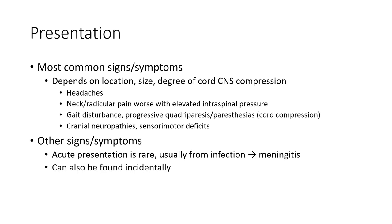Most common signs and symptoms depend on location, size, and degree of cord and CNS compression. These include neck and radicular pain worse with elevated intraspinal pressure, gait disturbance, progressive quadriparesis, cranial neuropathy, and sensory-motor deficit. Acute presentation is rare, usually from infection leading to meningitis, and can also be found incidentally.